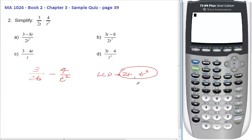Well, remember you need the LCD between the numbers 2 and 1, which would obviously be 2. And the LCD between t and t squared, you take the higher power. You're going to need t squared. So we have to make both of these denominators 2t squared.